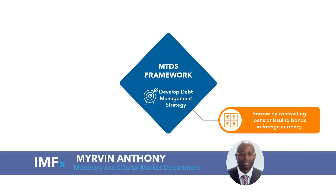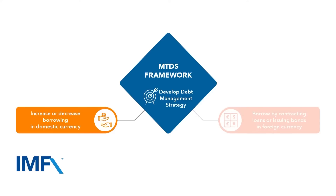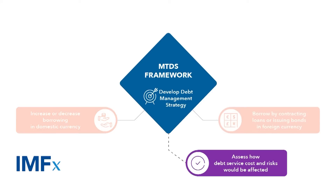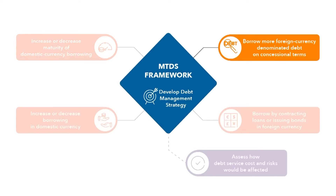If a country were to borrow more or less by contracting loans or issuing bonds in foreign currency, or increase or decrease borrowing in domestic currency, the medium-term debt management strategy framework can help it assess how its debt service costs and risks would be affected. If a country were to increase or decrease the maturity of its domestic currency borrowing, or borrow more foreign currency-denominated debt on concessional terms rather than on commercial terms, the MTDS framework can support it in developing a debt management strategy that is consistent with preserving debt sustainability.